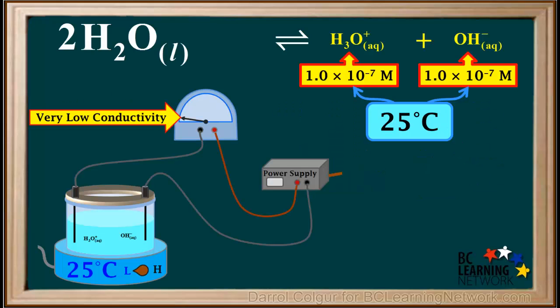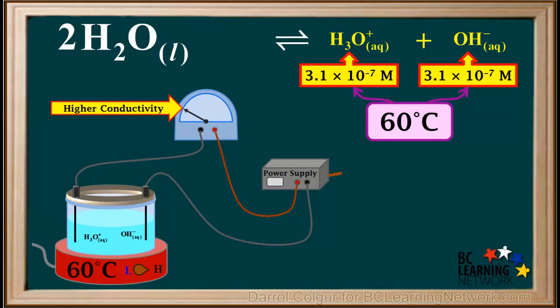At 25 degrees Celsius, the concentration of hydronium and the concentration of hydroxide are both 1×10⁻⁷ molar, and the conductivity of water is very low. However, when the temperature of water is increased to 60 degrees, the hydronium ion concentration and the hydroxide ion concentration both increase to about 3.1×10⁻⁷ molar.